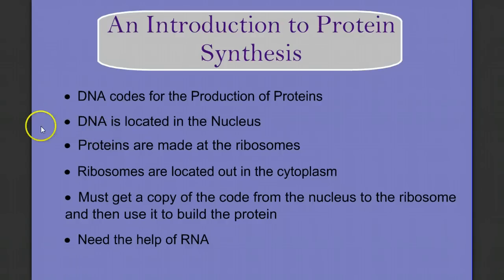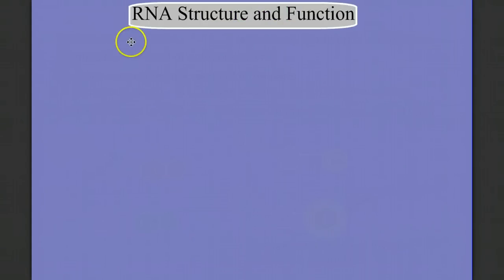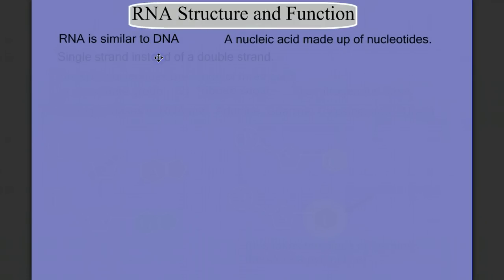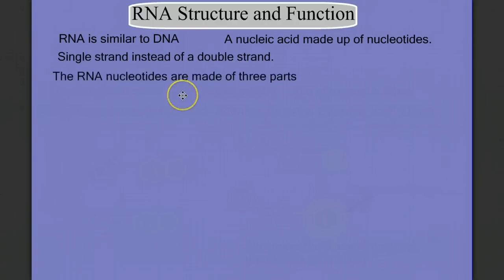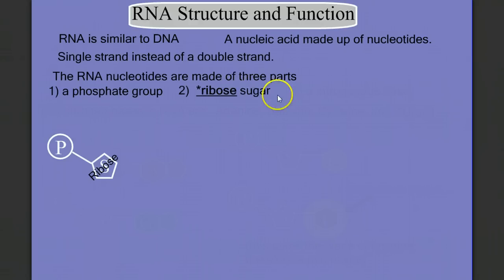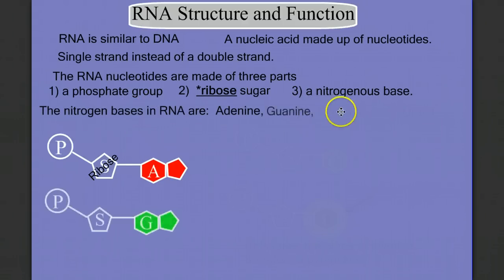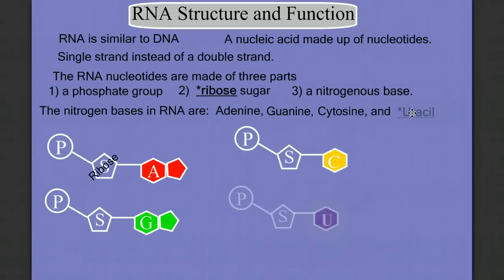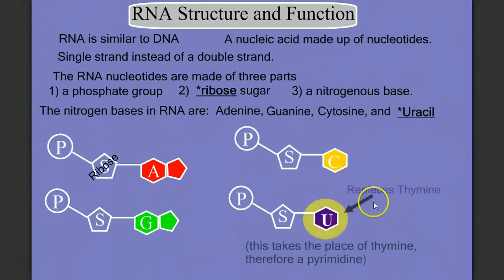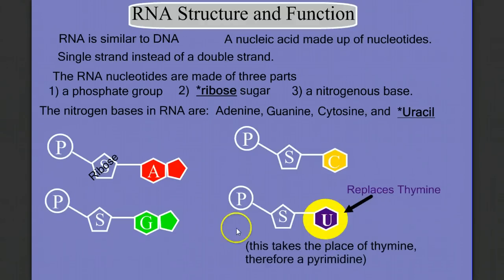Let's take a closer look at RNA, or ribonucleic acid. RNA is similar to DNA in that it is a nucleic acid made up of nucleotides. However, it's single-stranded instead of double-stranded. All RNA nucleotides are made of the same three parts: a phosphate group, ribose sugar instead of the deoxyribose found in DNA, and one of four nitrogenous bases — adenine, guanine, cytosine, and uracil. Uracil is the new one; it takes the place of thymine. There are no thymines in RNA — everywhere we would put a thymine, we use uracil instead.